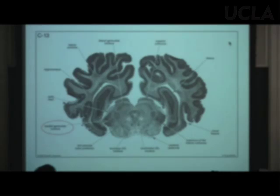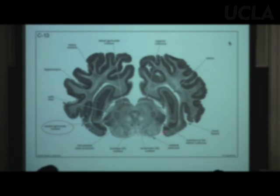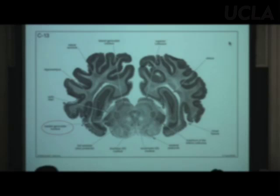This is a coronal section fairly far back — caudal in the telencephalon. Here we can see the medial geniculate nucleus. It's hard to hit it on a coronal section — you have to be exactly right. We'll probably see it better when we do horizontal sections next week.